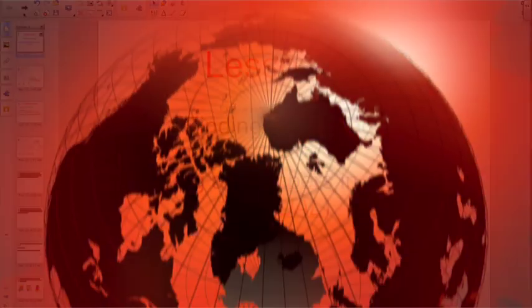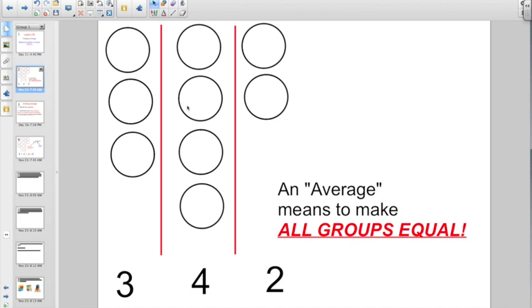Finding an average is making all numbers in a group equal. So we're going to start off with something like this. Remember, an average means to make all groups equal. And if we had a group of three and a group of four and a group of two, if you were going to make all groups equal, you'd have to take one over here and you'd end up with three groups of three, right?